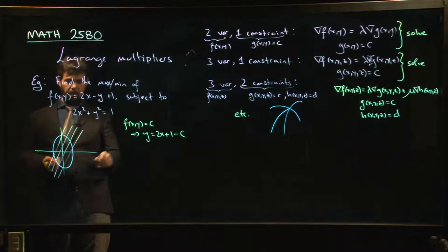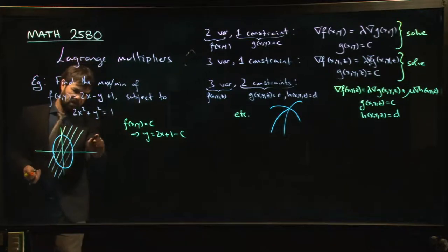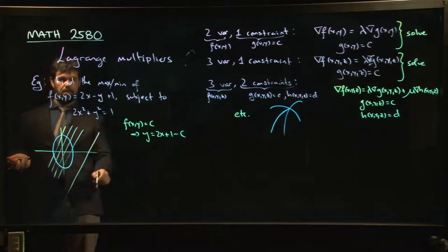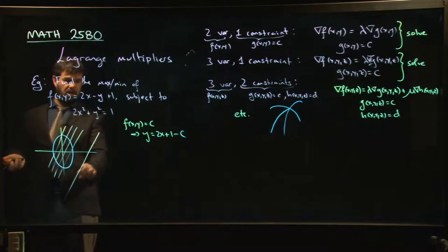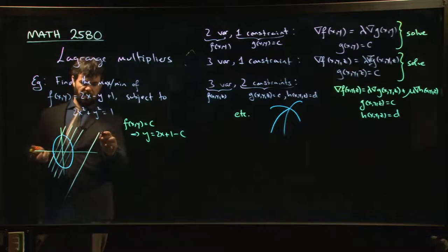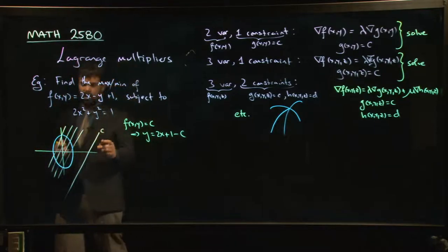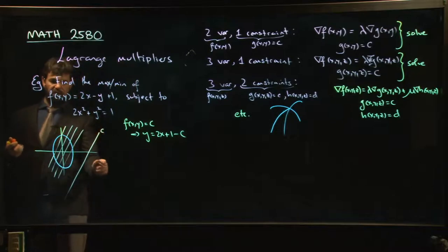If I make c too big, my line doesn't intersect the constraint curve and now I don't have any solutions. There will not be any points that satisfy this equation that give me that particular value of c, whatever this c value is. So I can't use that. So we ask, what's the biggest value of c we can have where we still satisfy the constraint?